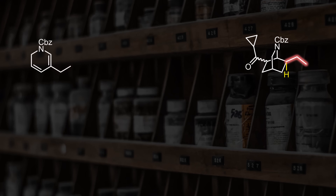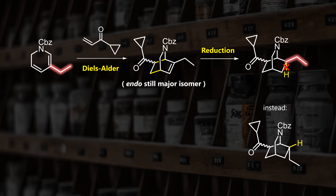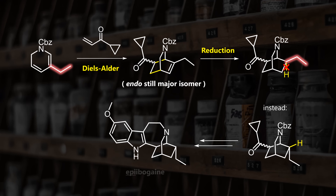Reflecting on the challenges of the last two steps, you might want to directly include the ethyl group in the pyridine diene. The issue is the stereoselectivity of the required reduction — all attempted methods delivered hydrogen from the bottom face, giving the endo-methyl product. This is useful if you want to synthesize epi-iboga isomers, but for the real target it doesn't help, so we have to stick with this approach.